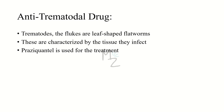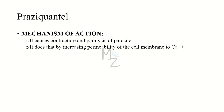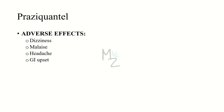Trematodes are the flukes — leaf-shaped flatworms characterized by the tissue they infect, for example liver, lung, intestinal, or blood. Praziquantel is the drug of choice for the treatment of trematode and sometimes cestode infections. It is contraindicated for the treatment of ocular cysticercosis, because destruction of organisms in the eye may cause irreversible damage. The following drugs increase its metabolism: dexamethasone, phenytoin, rifampin, and carbamazepine. Mechanism of action: it causes contracture and paralysis of the parasite by increasing permeability of the cell membrane to calcium. Pharmacokinetics: it is rapidly absorbed after oral administration and should be taken with food; the drug is extensively metabolized and inactive metabolites are excreted primarily in urine. Common adverse effects include dizziness, malaise, headache, and GI upset.